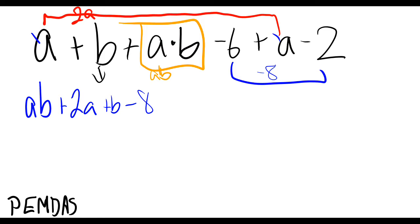Okay, so that's simplified there. We can't add the 2A to the AB or the B to the AB. It's not going to work because that's multiplication and these are addition.